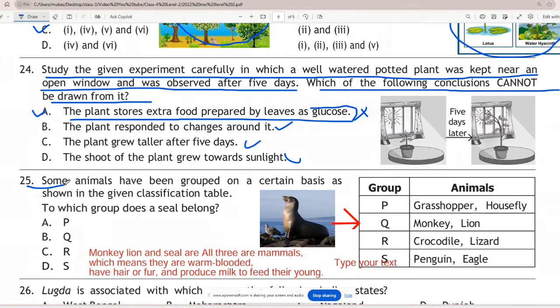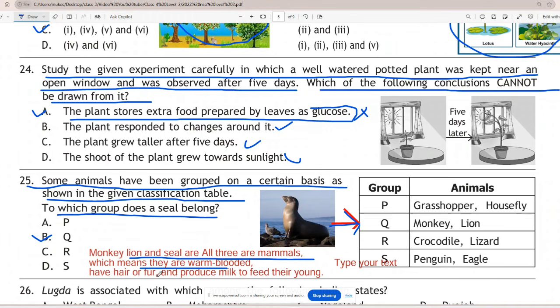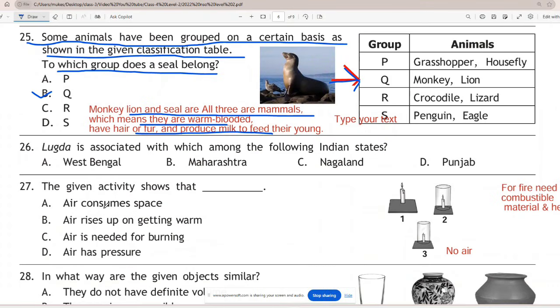Question 25: Some animals have been grouped on a certain basis as shown in the given classification table. To which group does a seal belong? The correct answer is B - monkey and lion. As monkey, lion and seal are all three mammals, which means they are warm-blooded, have hair or fur, and produce milk to feed their young. Mammals meaning an animal of the type that gives birth to live babies, not eggs, and feeds its young on milk from its own body.